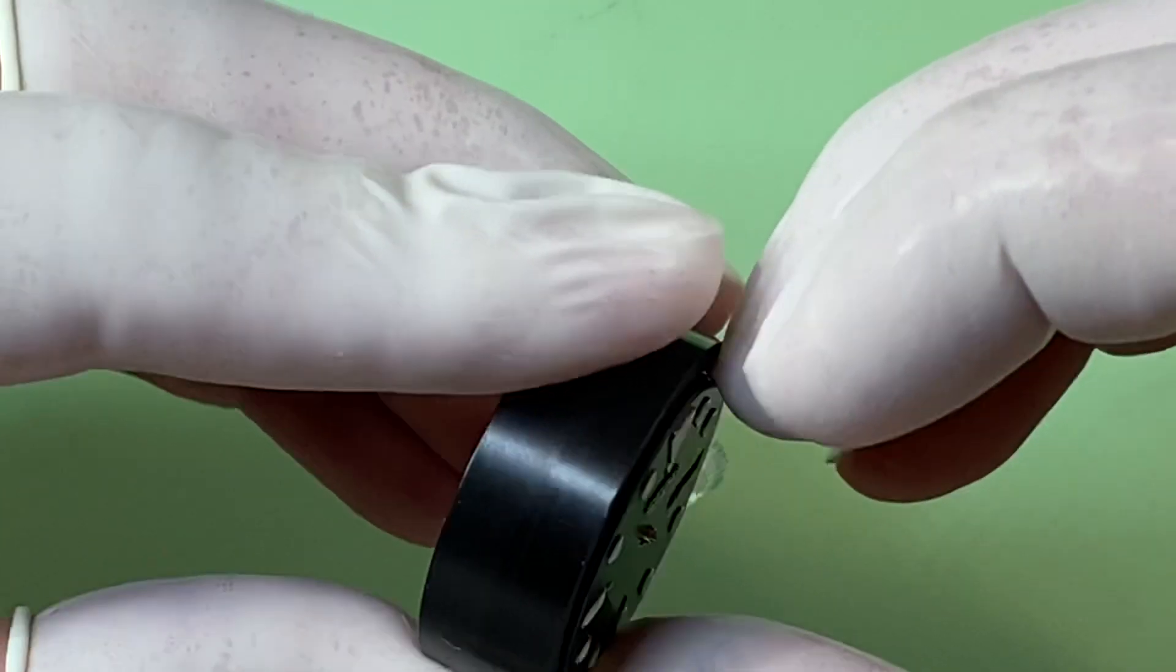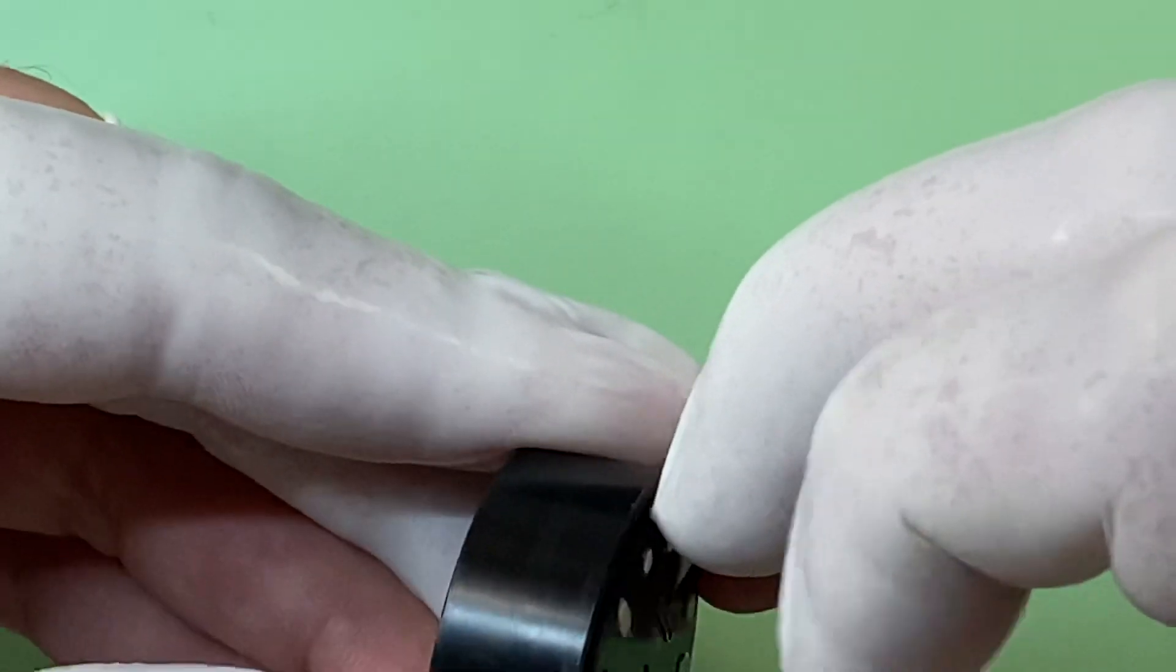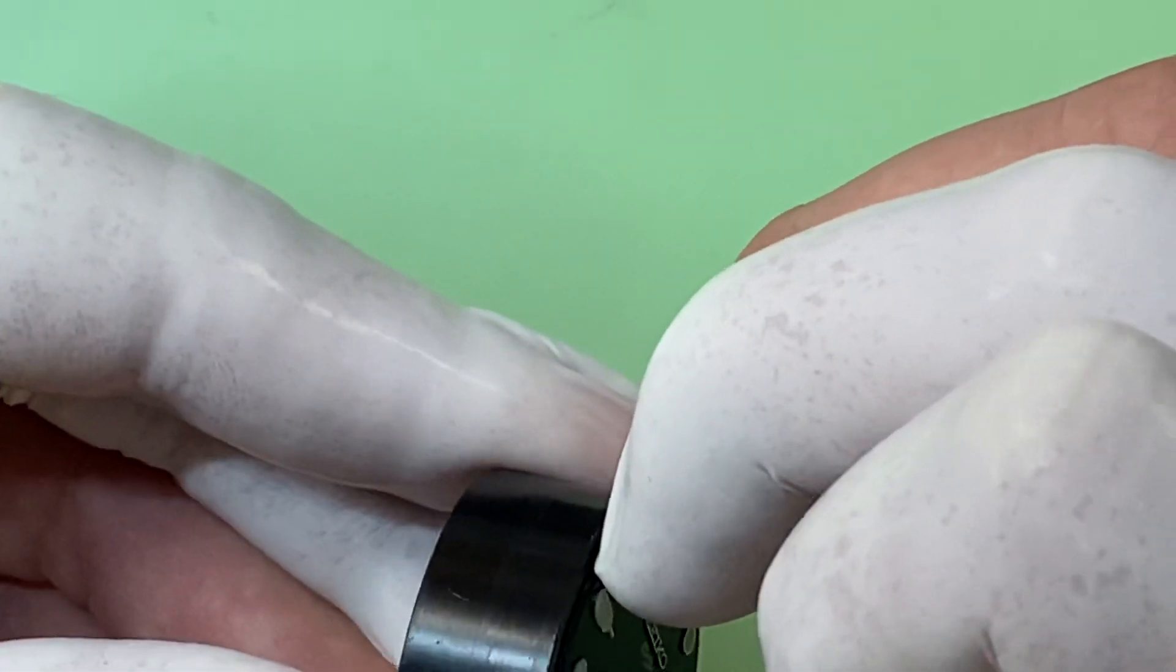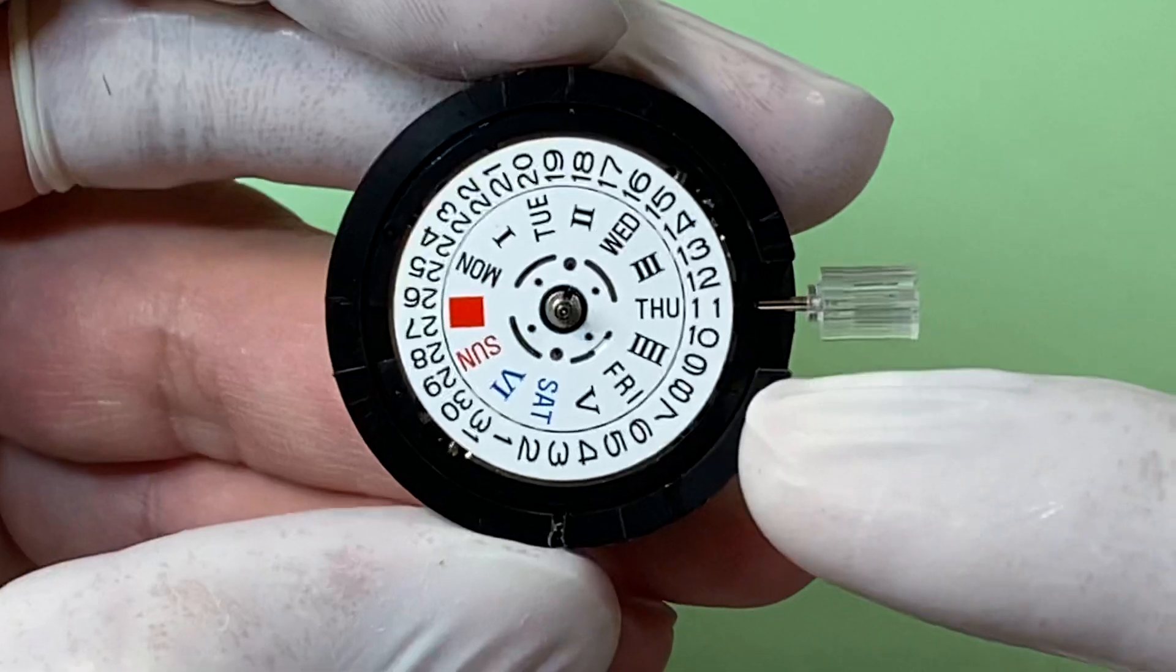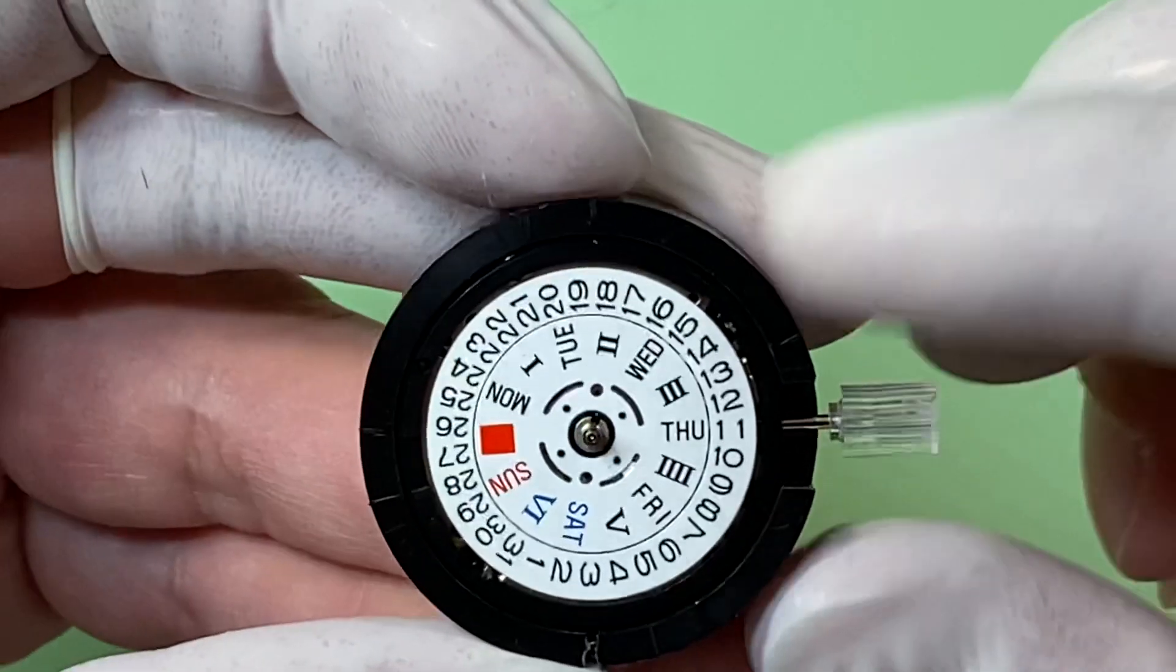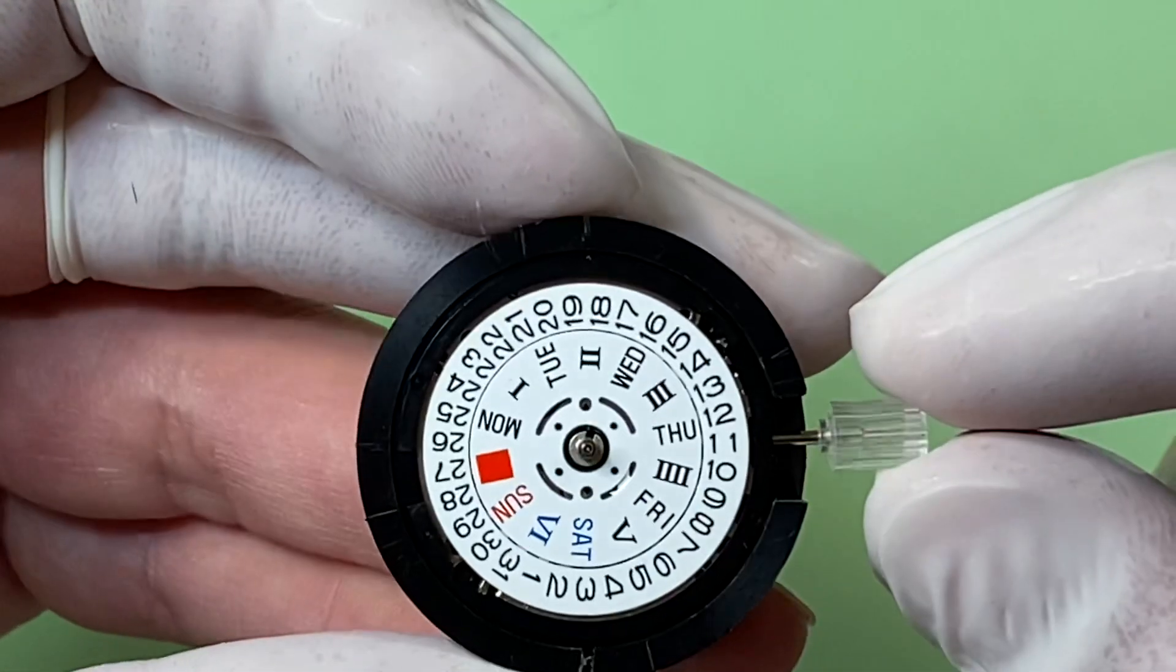If you take the dial off the dial holder here, you can see—if you look at the stem going in—this would be three o'clock position. The Thursday and the 11 are lined up with the crown.